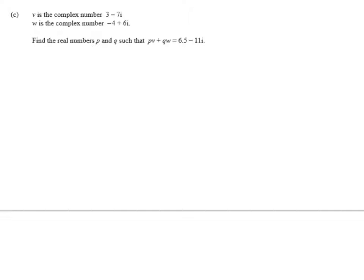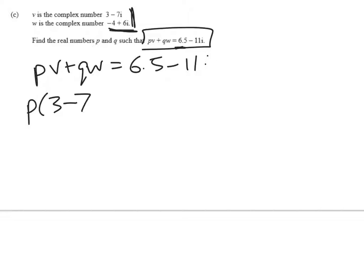So v is complex number 3 minus 7i and w is another complex number and they're both in rectangular form. We need to find real numbers p and q such that this expression is true. What we're going to do here is work with these and then match up the coefficients. So substituting in, if we've got pv plus qw equals 6.5 minus 11i, p times 3 minus 7i plus q times negative 4 plus 6i is equal to 6.5 minus 11i.